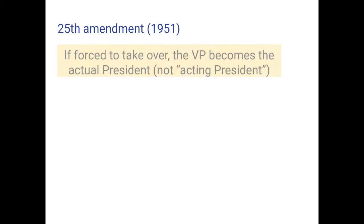The 25th Amendment was ratified in 1951 and cleans up some misconceptions about presidential succession. The first thing it establishes is that if the president has to leave office or dies in office, the vice president actually becomes the president — not an acting or temporary president, but officially holds all the actual powers of the presidency. That just puts it into writing.